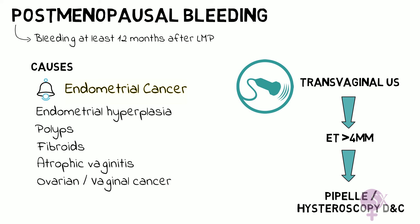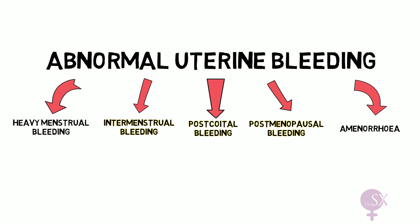The endometrial sample can be obtained either in an outpatient setting via Pipelle, or under general anesthetic during a hysteroscopy and D&C. For further information on endometrial cancer, you can look at the video on uterine pathologies 2, linked in the description below. That's all you need to know about IMB, PCB, and PMB. I hope this video was helpful; in my next video I will discuss amenorrhea.